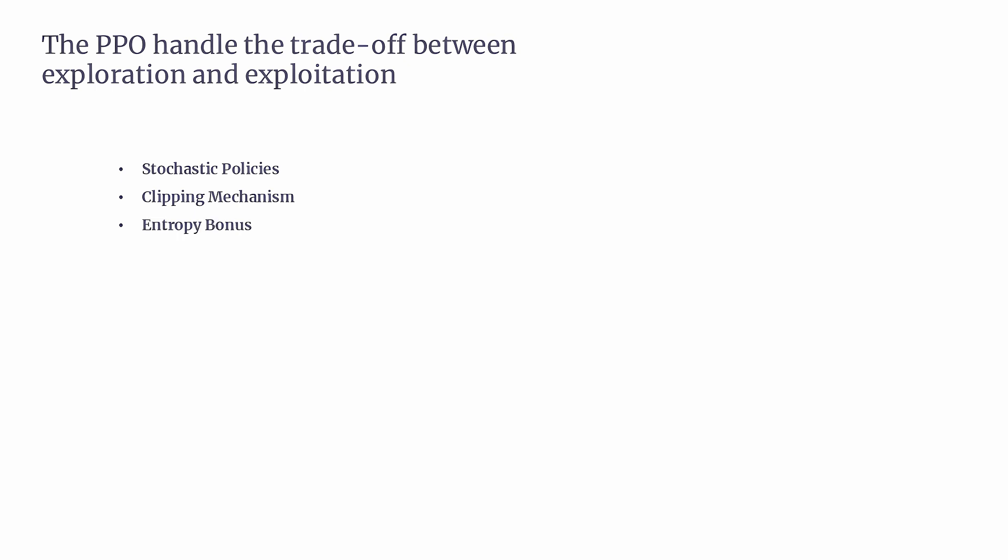Third, the entropy bonus. PPO includes an entropy bonus in its objective function. Think of entropy as a measure of randomness or uncertainty in the agent's choices. By encouraging higher entropy, the agent is nudged to try less certain actions rather than always sticking to familiar ones. This helps the agent avoid getting stuck too quickly in a specific strategy, allowing it to explore more possibilities. Fourth, generalized advantage estimation. PPO uses Generalized Advantage Estimation to stabilize learning. GAE smooths out advantage estimates, which are used to decide how much better an action is compared to others. This stability lets the agent make more informed updates, balancing between trying new actions and sticking with successful ones.